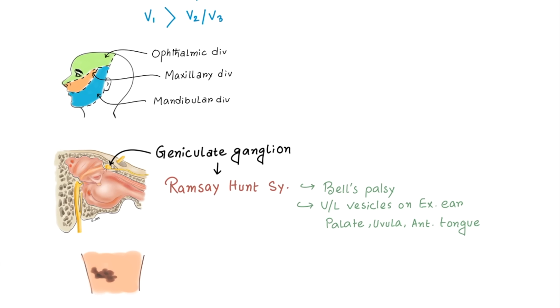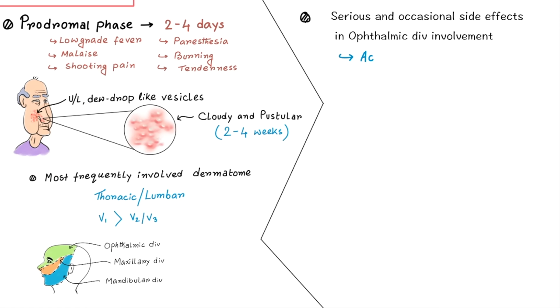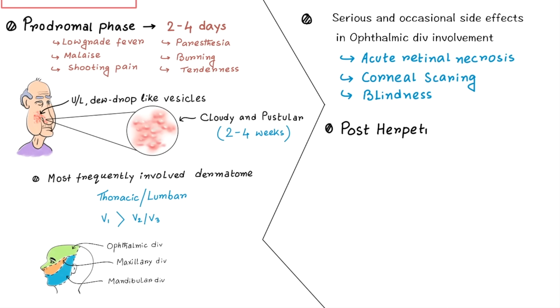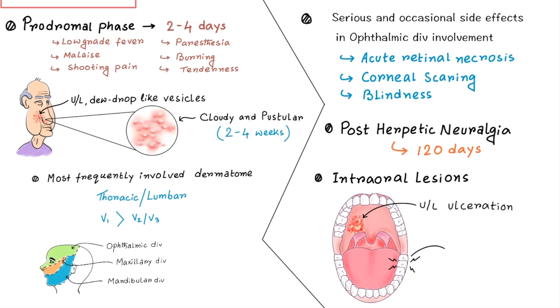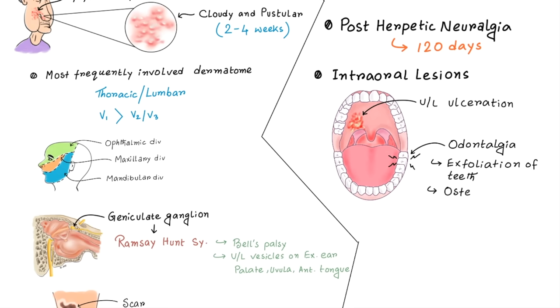Lesions commonly heal with scarring and hypopigmentation. Serious sequelae and ocular side effects in V1 or ophthalmic division involvement is acute retinal necrosis, corneal scarring and blindness. Sometimes pain lingers for 120 days which is called post-herpetic neuralgia. Intraorally multiple ulcerative extremely painful lesions are seen unilaterally which cause severe odontalgia or toothache and then exfoliation of tooth, osteonecrosis, pulpal necrosis and internal root resorption.